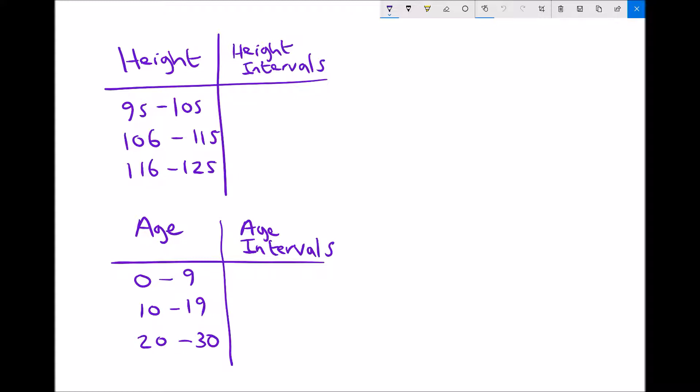Let's take the example at the top there with heights. Let's assume that these are the heights of children in centimeters. We have a group for people of height 95 to 105 centimeters, a group for people 106 to 115 centimeters, and a group for people 116 to 125 centimeters.